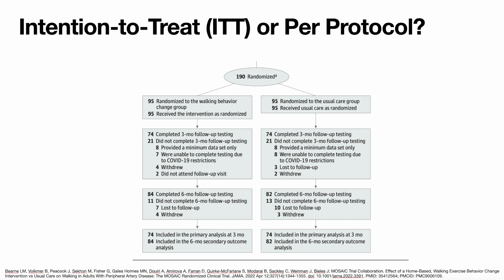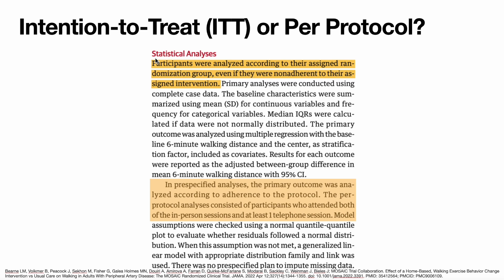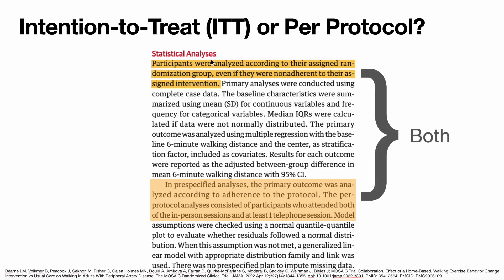So was this study analyzed intention-to-treat or per-protocol? In the statistical analysis section, it states that participants were analyzed according to their assigned randomization group, even if they were non-adherent to their assigned intervention — that is the primary analysis, which is intention-to-treat. Additionally, a per-protocol analysis was performed consisting of participants who adhered to the protocol. So this study has two different analyses: one intention-to-treat for the primary analysis, and one per-protocol aspect.